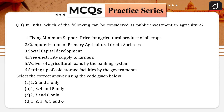Next question: in India, which of the following can be considered as public investment in agriculture? Options: fixing minimum support price for agricultural produce of all crops; computerization of primary agricultural credit societies; social capital development; free electricity supply to farmers; waiver of agricultural loans by the banking system; or setting up of cold storage facilities by the government.